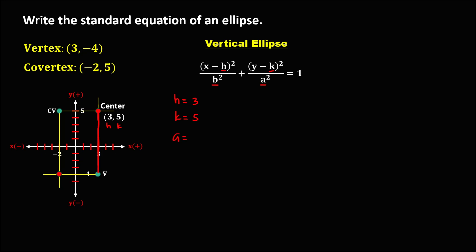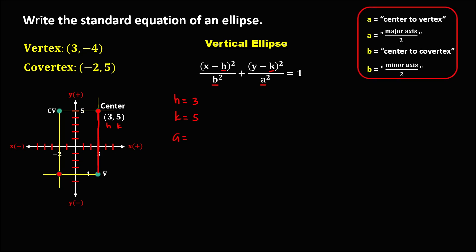To solve for a, we use the formula for the distance from the center to the vertex. Using the counting method on the graph, counting from the center to the vertex, we get 1, 2, 3, 4, 5, 6, 7, 8, 9. Therefore, a is equal to 9.